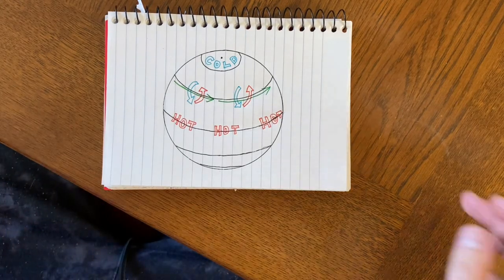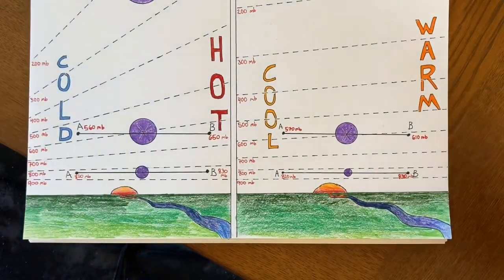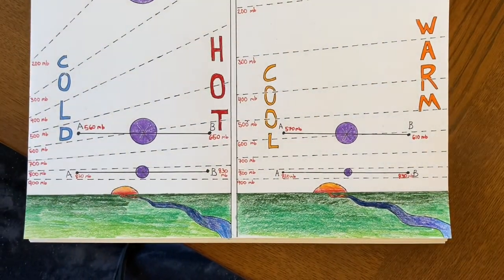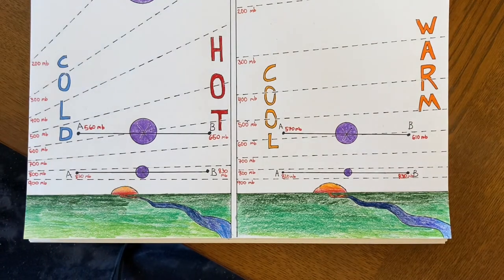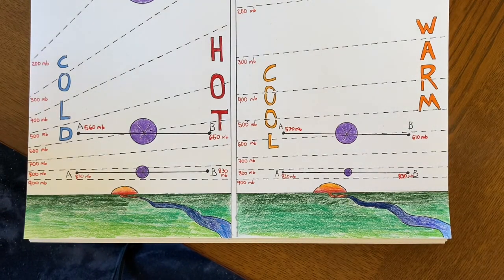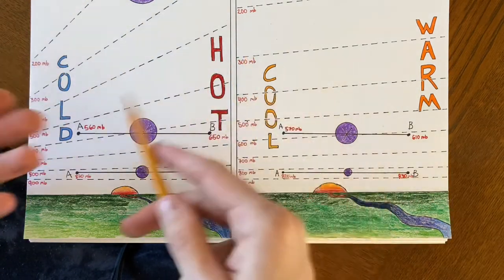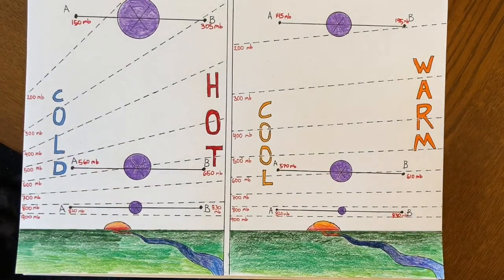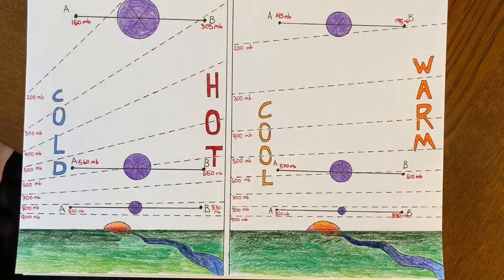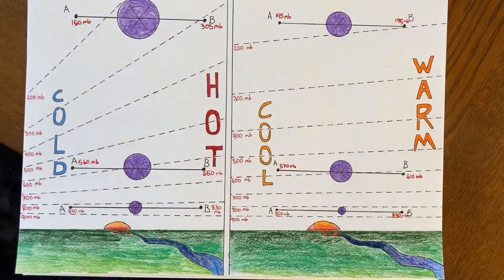And jet streams, we also find associated with frontal systems a lot of the time. Because when you have a front, you have a cold air mass and a hot air mass. A front is just an area where the temperature changes pretty rapidly over a short distance. So with that, we've got this sloping pressure line set up because of that. And so often jet streams are associated with fronts.